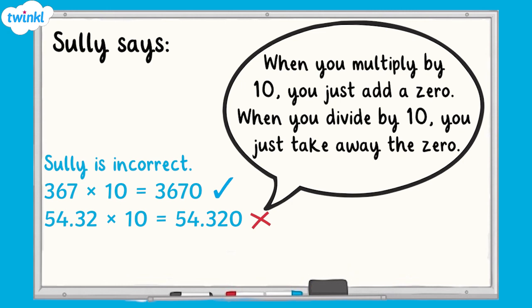The same is true when dividing by 10. For example, 180 divided by 10 equals 18. However, if we apply this to a decimal number, the pattern doesn't work. For example, 85.40 divided by 10 does not equal 85.4.